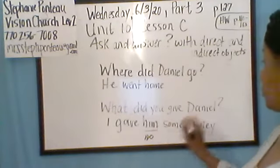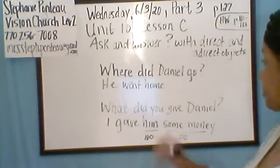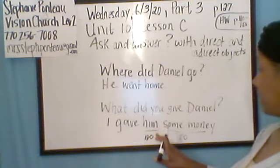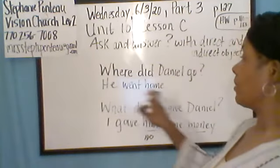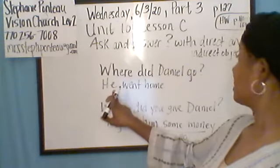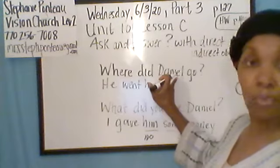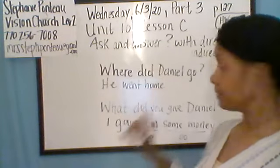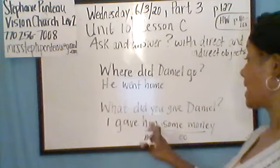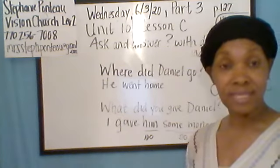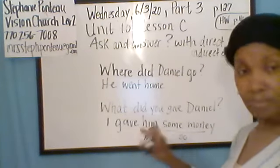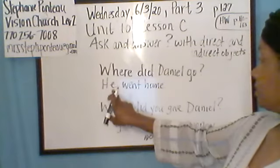That's the difference: I used 'him' in this sentence because there is an indirect object. In the sentence 'Where did Daniel go? He went home,' there are no objects, so 'he' is the pronoun for Daniel. But in 'What did you give Daniel? I gave him some money,' there are objects. The direct object is 'some money' — that's what I gave him. And 'him' is the indirect object — who did you give it to? So we switch the pronoun to 'him.' I hope that helps.